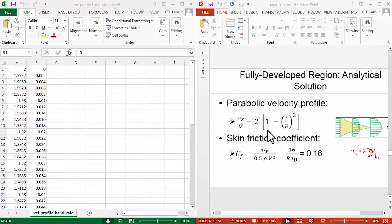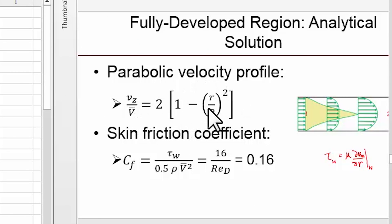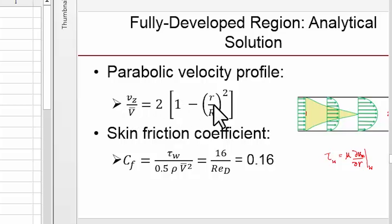We will compare the velocity profile at the outlet that we get from the Fluent solution to the corresponding analytical result in the fully developed region. We have an analytical result only in the fully developed region, and we saw in the pre-analysis that the velocity profile equation looked like that. I want to compare the velocity profile we get from this equation to the velocity profile at the outlet in the Fluent solution.